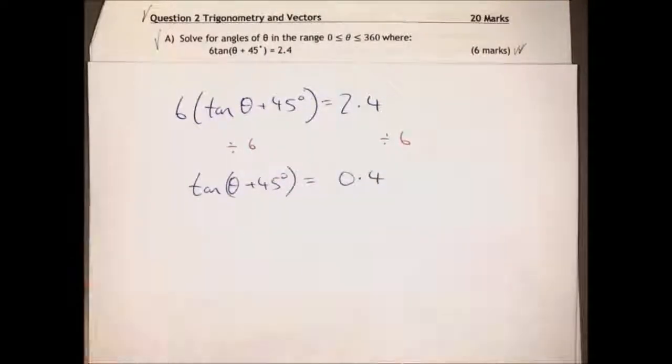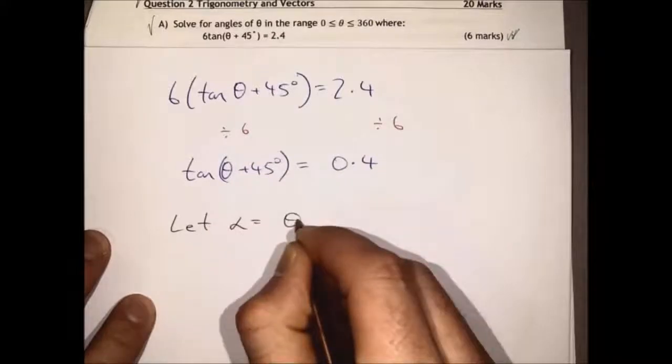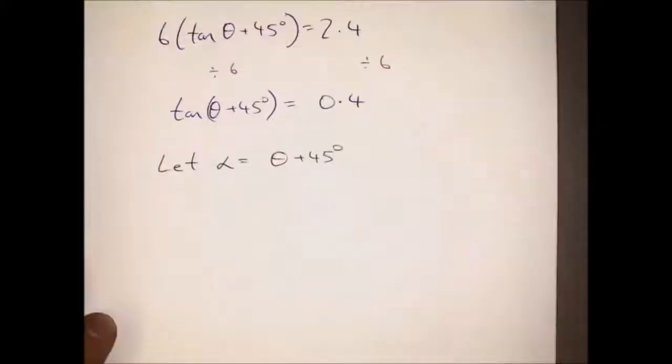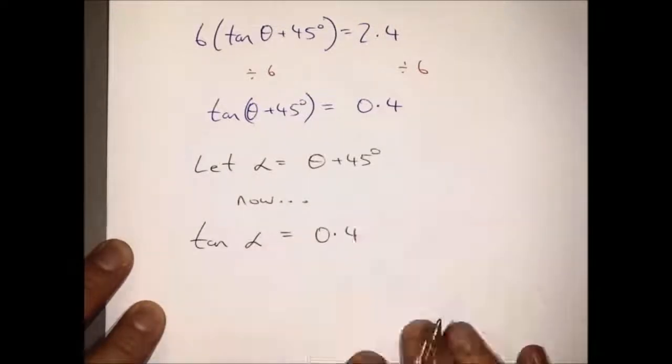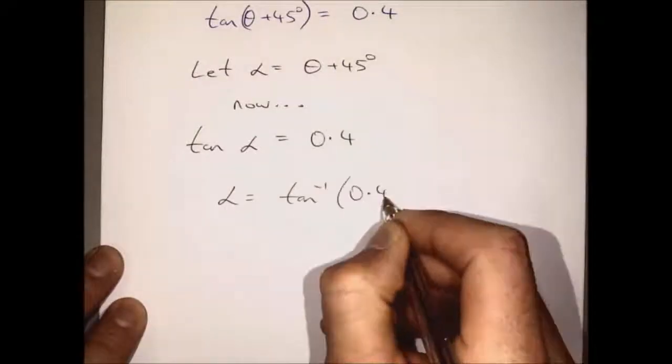So we get tan theta plus 45 degrees equals 0.4. Now let alpha equal theta plus 45. This makes things more straightforward and we'll proceed as if it's a new question for the time being.